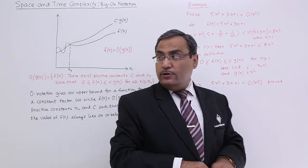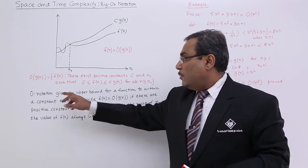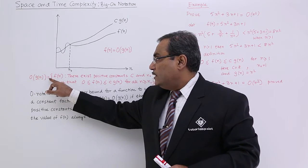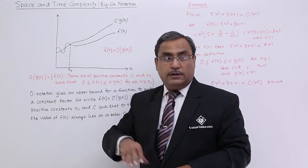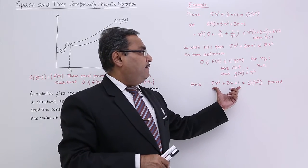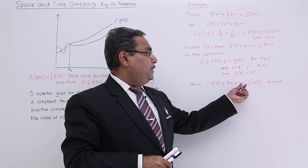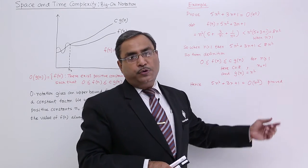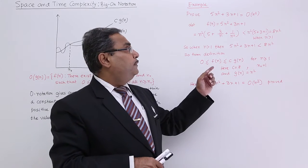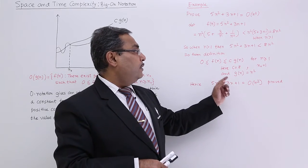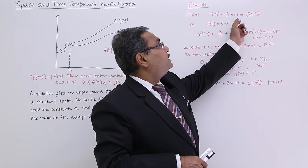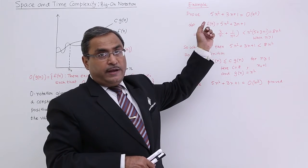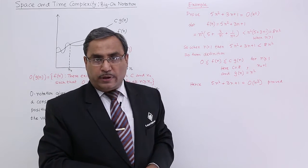Since g(n) = n², we have written Big O of g(n) equals f(n). That is why this particular f(n) equals O(n²), and hence proved. In this way we have found out that the complexity of this f(n) is O(n²), completing the calculation of the upper bound.